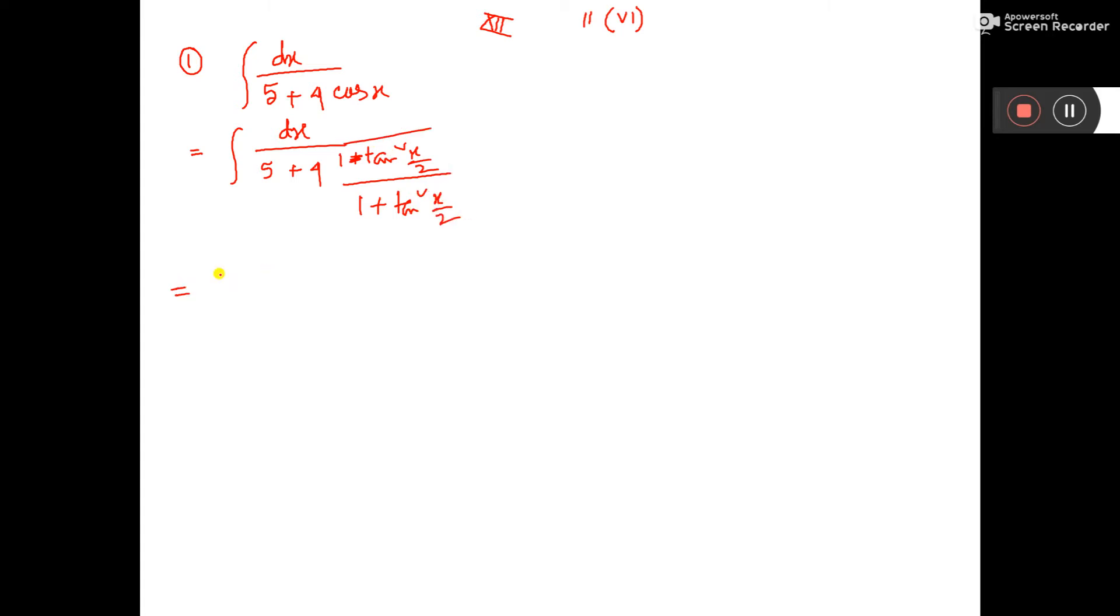So that is equal to, if you take LCM this will go off, 1 plus tan square x by 2 dx, here it will come 5 into 1 plus tan square x by 2 plus 4 into 1 minus tan square x by 2.